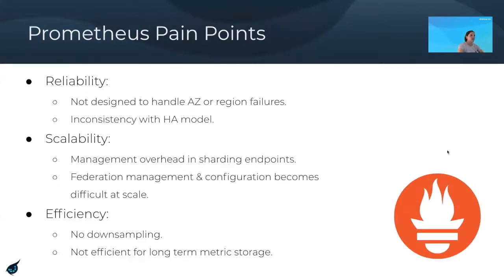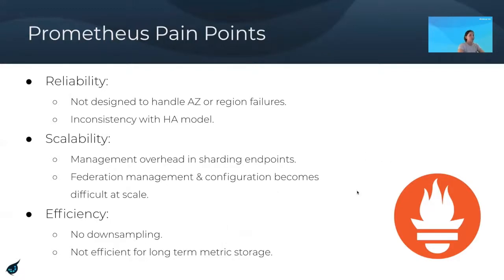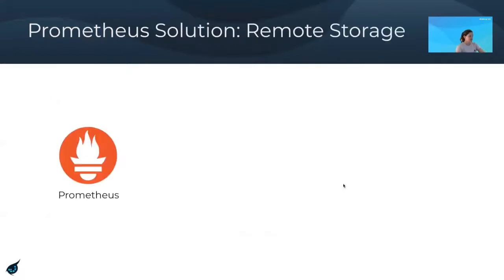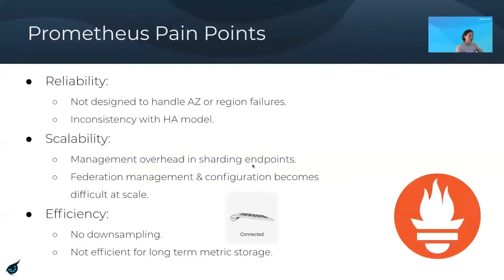To recap the major pain points regarding scaling Prometheus: from a reliability perspective, it's not really designed to handle availability zone or region failures with a high level of consistency. In terms of scalability, the management overhead of sharding various data sources and managing federation and configuration becomes very painful at scale. And in terms of efficiency, while Prometheus is great at storing short-term metrics, without downsampling capability there's no great solution for storing longer-term data.